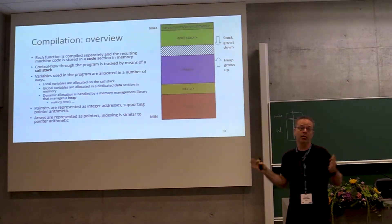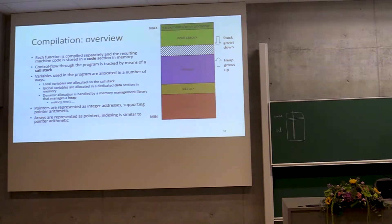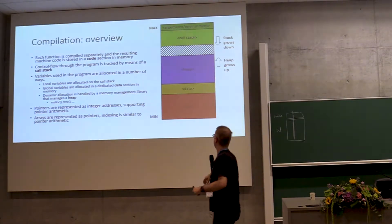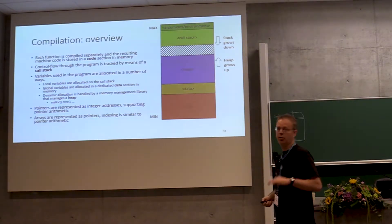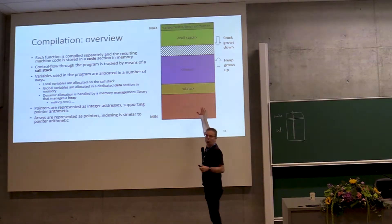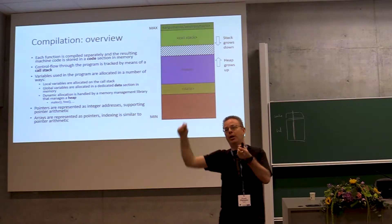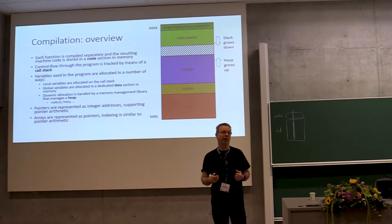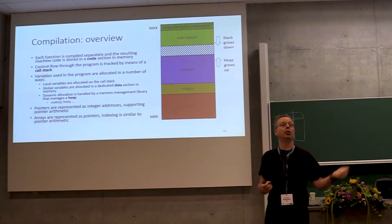The main actor that decides how data and code is organized in memory is the compiler. The compiler translates all C functions into machine code and puts all that machine code next to each other in what is called the code section — at the bottom of memory in GCC on Linux. Functions are compiled separately, so we need to track control flow: when F calls G, G calls H, and when H returns we need to return to G, and so on. That's tracked in a data structure called the call stack, at the top of memory, which has one activation record per active function containing where we should return to after the function completes.